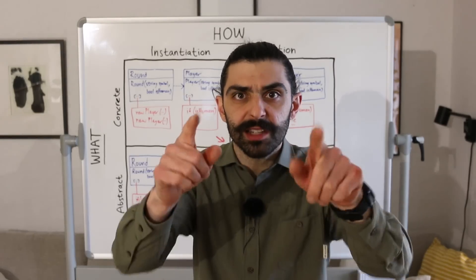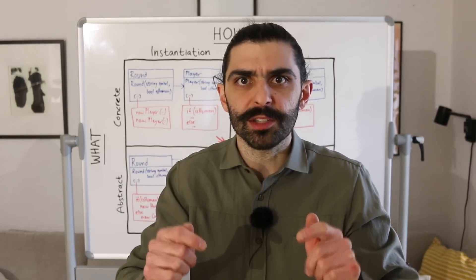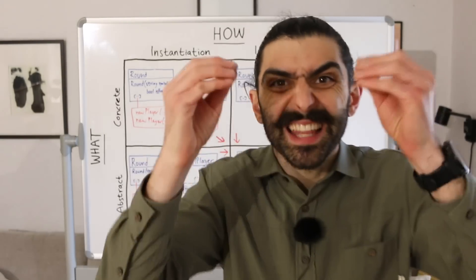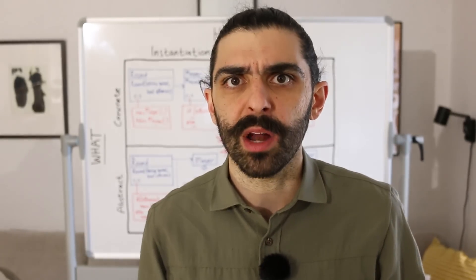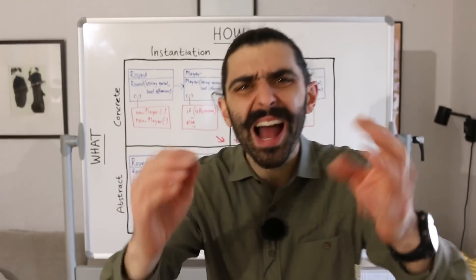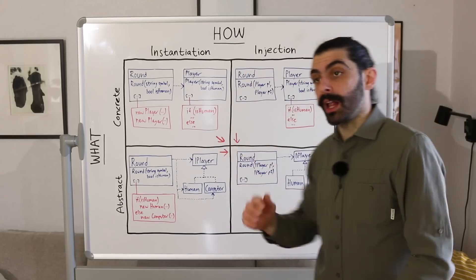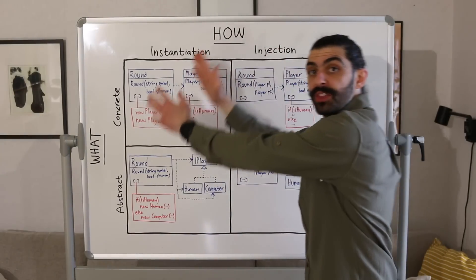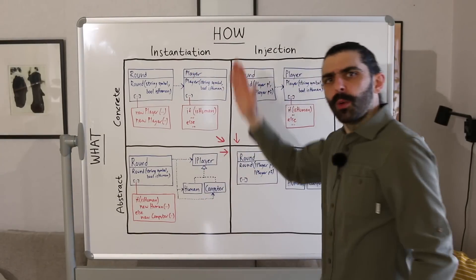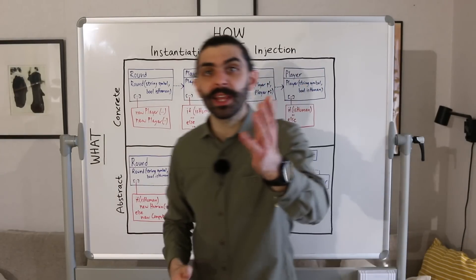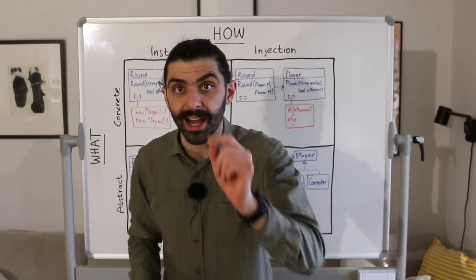Depend on abstractions, not on concretions. This is perhaps the most important principle in object-oriented programming. But why is it so important? Let me show you this framework which helps explain why.